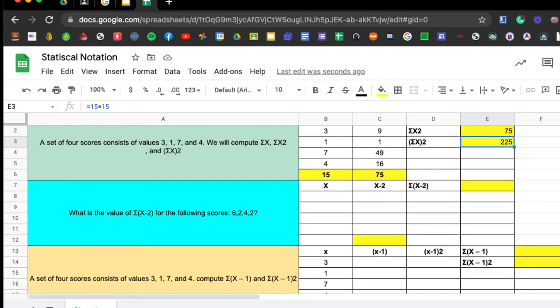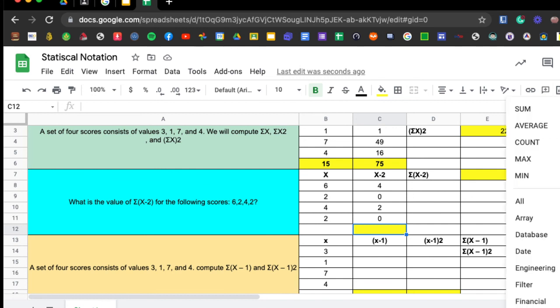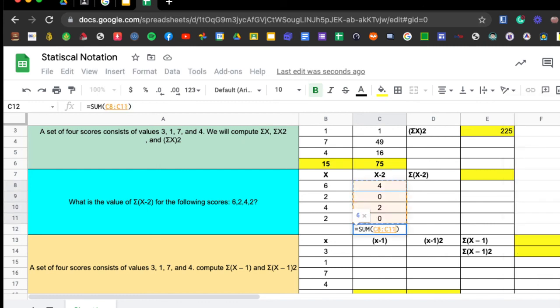Another set of activities. What is the value of the summation of X minus 2 for the following scores? We have the scores of 6, 2, 4, and 2. Here, we're going to take a look. It has an operation of X minus 2. So we're going to subtract our X with 2. So 6 minus 2 is 4, 2 minus 2 is 0, 4 minus 2 is 2, 2 minus 2 is 0. So we're getting the summation of X minus 2. We're going to get the sum of the variables of X minus 2, so it is 6. The answer here on the summation of X minus 2 is 6.